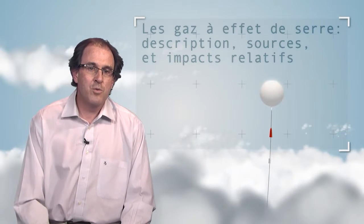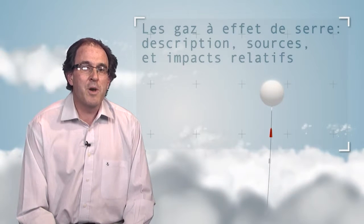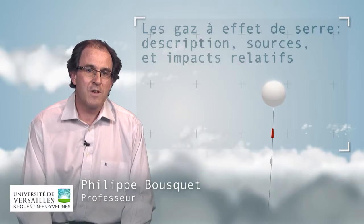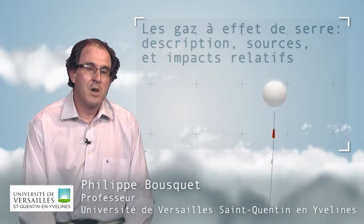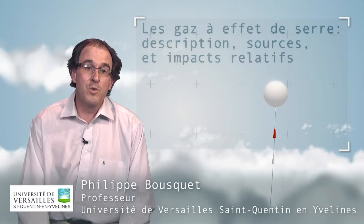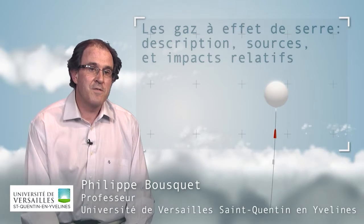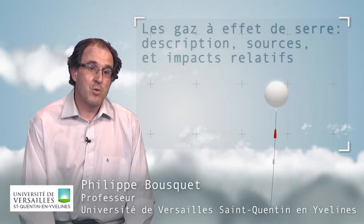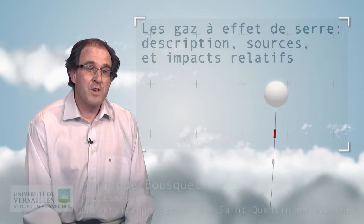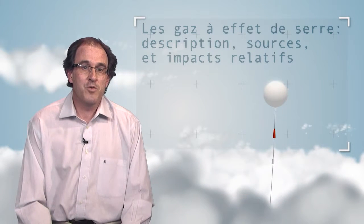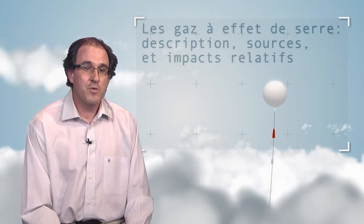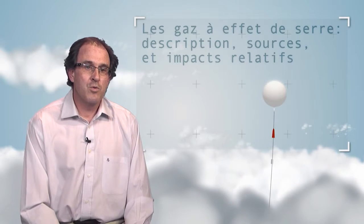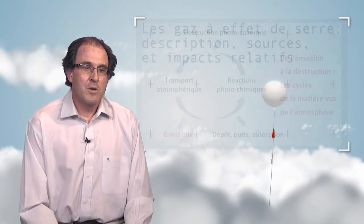The greenhouse effect is a natural phenomenon that allows the global surface temperature to be 15 degrees Celsius. It would be minus 15 if there was no greenhouse effect. It is due to a number of compounds present in the atmosphere, which we're going to cover in this introduction.